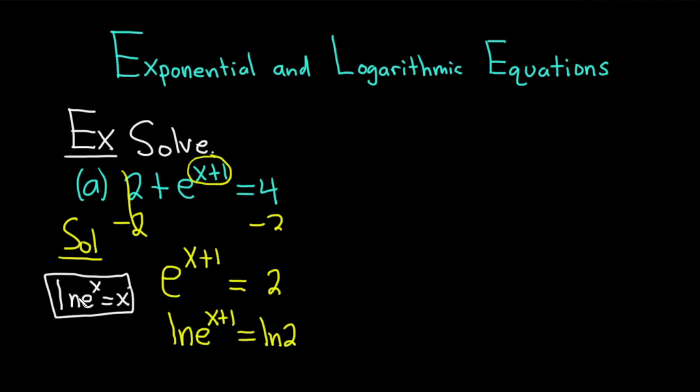This is basically saying that the natural log of x and e to the x are inverse functions. Basically, these cancel, and so you're left with x plus 1 equals the natural log of 2. You can subtract 1 from both sides, and so you get x equals the natural log of 2 minus 1. That would be the solution to this equation. Whenever you have a single exponential like this, you want to solve for it, and then to get rid of the e, take the natural log.